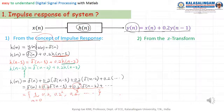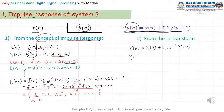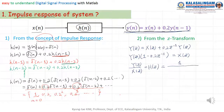Another way is from the G-transform. Let me apply G-transform here. We can write: Y(G) equals X(G) plus 0.2 G to the power minus 1 times Y(G). From this, Y(G) times (1 minus 0.2 G to the power minus 1) equals X(G). Here, Y(G) divided by X(G) — we call this the transfer function — H(G) equals 1 divided by (1 minus 0.2 G to the power minus 1).